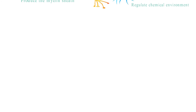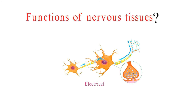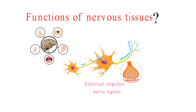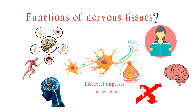So what's the function of nervous tissue? Well, it's all about transmitting electrical impulses or nerve signals. These signals are vital for sensory perception, motor control, coordination, and communication within our bodies. Nervous tissue also plays a significant role in higher cognitive functions like memory, learning, and decision-making.